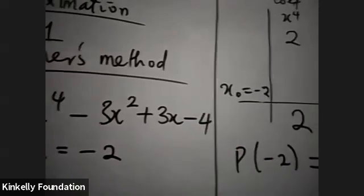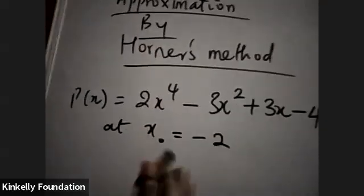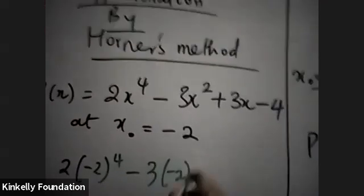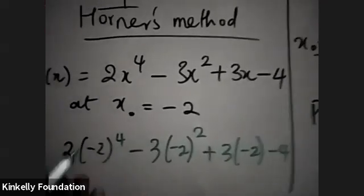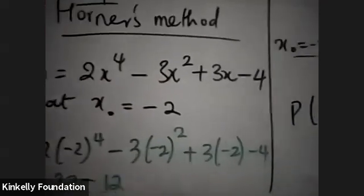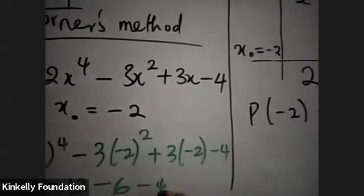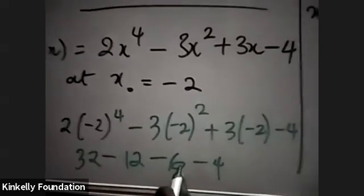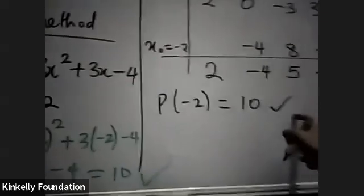Let us verify. If we put minus 2 directly: this is 2 times (minus 2) raised to the power of 4, minus 3 times (minus 2) squared, plus 3 times (minus 2), minus 4. Two raised to the power of 4 is 16, and 16 times 2 is 32. Minus 2 squared is 4, and 4 times 3 is 12. This gives minus 6 and minus 4. So, 32 minus 12 is 20, minus 6 is 14, minus 4 is equal to 10, which is what we have.